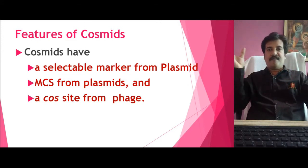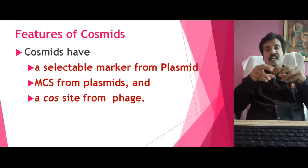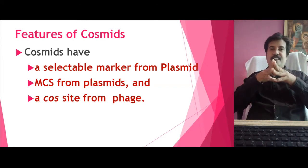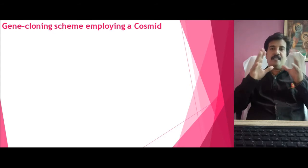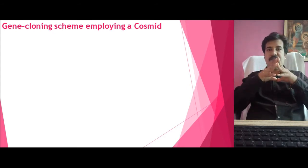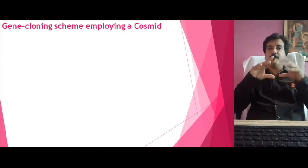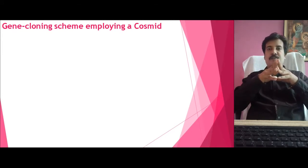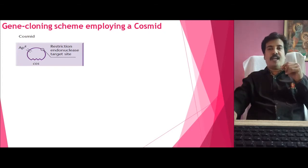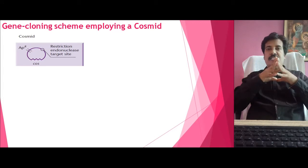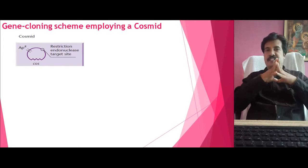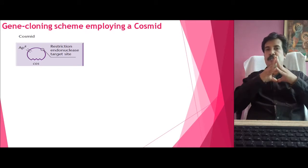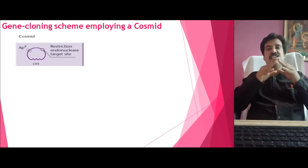When compared to the Plasmid and the Phage vector, the major benefit the Cosmid has done is that we can enclose a large amount of DNA into this vector. Let us understand how gene cloning can be done with the help of the Cosmid. I have given a pictorial representation of the gene cloning scheme, how it is generally carried out using a Cosmid vector. First, we have to take a Cosmid vector. From the figure, you can see the Cosmid vector carries three sites: one is the marker site — in this example the Ampicillin resistant (APR) — and second, it carries a Restriction Endonuclease target site, that is the Multiple Cloning site, both derived from the Plasmid part. And the Cos site is derived from the Phage part of the vector.